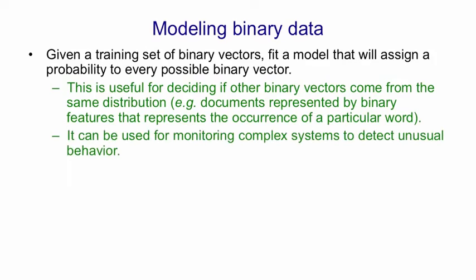You could also use Boltzmann machines for monitoring complex systems to detect unusual behavior. Suppose, for example, that you had a nuclear power station, and all of the dials were binary. So you get a whole bunch of binary numbers that tell you something about the state of the power station. What you'd like to do is notice that it's in an unusual state, a state that's not like states you've seen before. And you don't want to use supervised learning for that, because really you don't want to have any examples of states that cause it to blow up. You'd rather be able to detect that it's going into such a state without ever having seen such a state before. And you could do that by building a model of what the normal states look like, and then noticing that this state is different from the normal states.